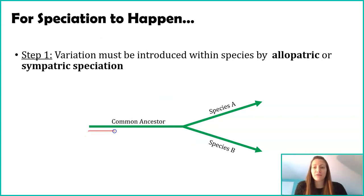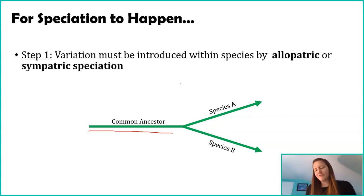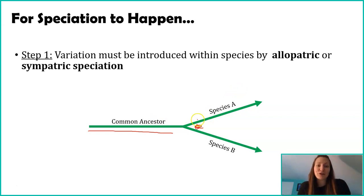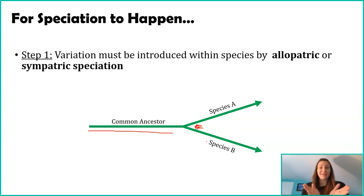Very simply, this single line represents the common ancestor — a single species. This could be the common ancestor of gorillas and humans. Variations getting introduced, maybe through allopatric speciation, and that variation starts causing a divergence. Some organisms from this common ancestor are diverging in one direction — maybe these ones are using all four limbs and are adapted for climbing — whereas the other population is becoming better adapted for long-distance running.